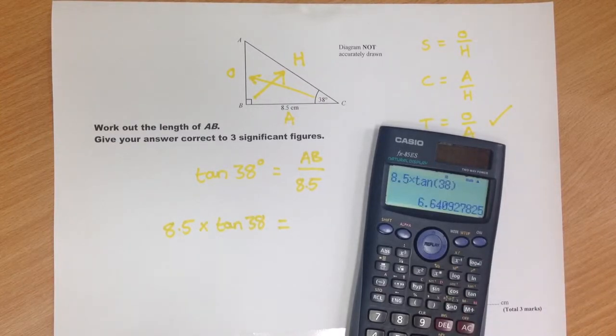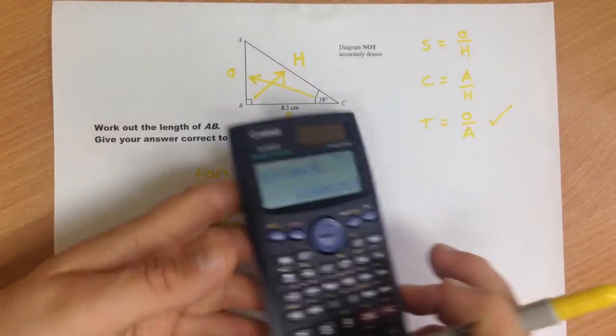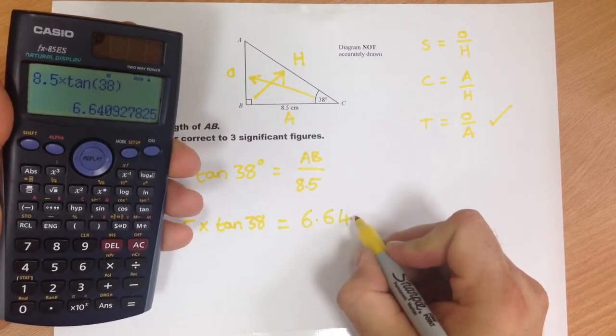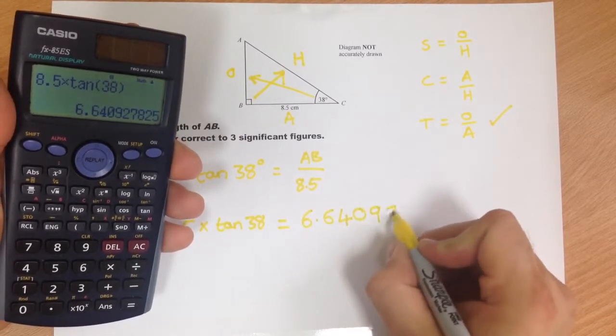And the question says give the answer to three significant figures. So we've got 6.64092.